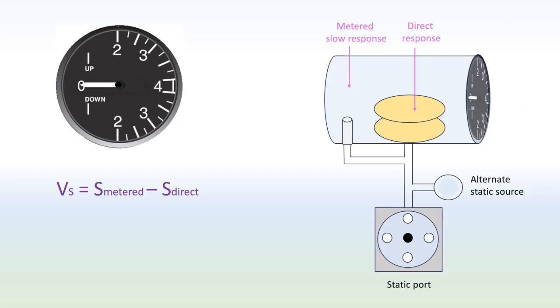Since the VSI relies on the static port only, when it gets clogged, both the diaphragm and the case receive no pressure from the static line. This causes the vertical speed to read zero, regardless of the plane's actual actions.